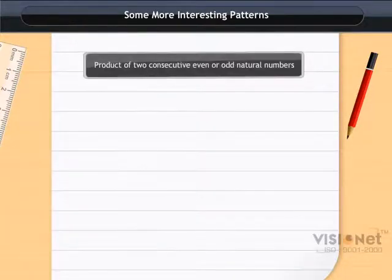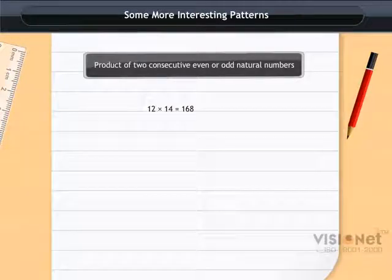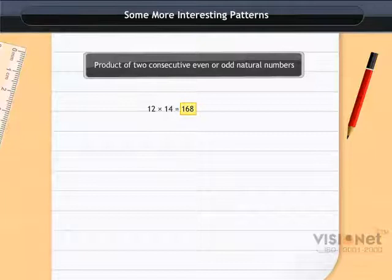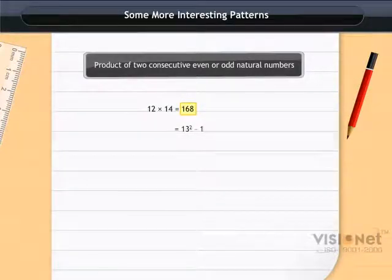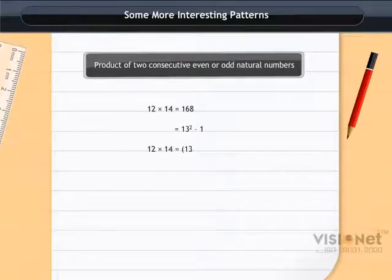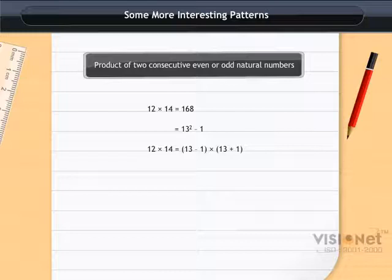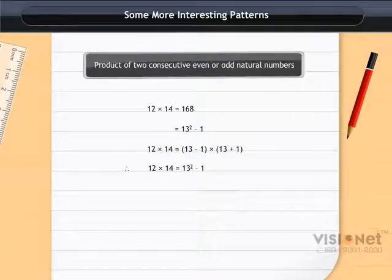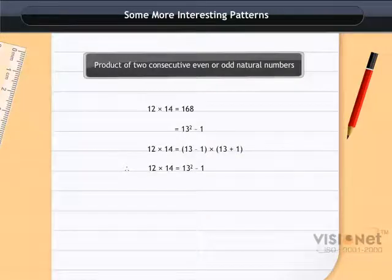Consider the product 12 into 14. It is equal to 168. We can write 168 as 169 minus 1, or 13 squared minus 1. Also, 12 into 14 can be written as (13 minus 1) into (13 plus 1). Therefore, from the above two equations, we have 12 into 14 is equal to 13 squared minus 1.